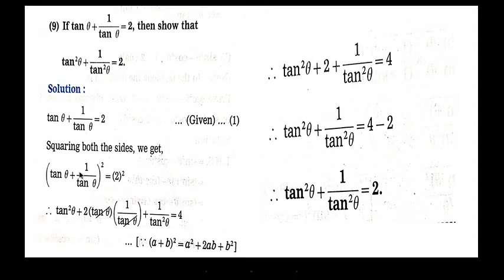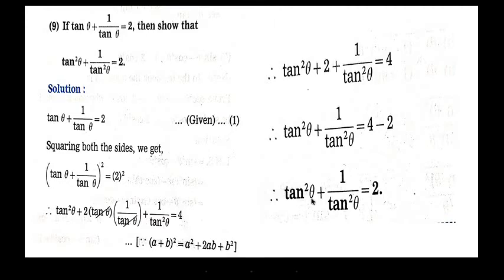The left hand side tan theta plus 1 upon tan theta whole square is in the form a plus b whole square, which equals a square plus 2ab plus b square. So we have tan square theta plus 2 into tan theta into 1 upon tan theta plus 1 upon tan square theta equals 4. The middle term tan theta and 1 upon tan theta cancel, giving tan square theta plus 2 plus 1 upon tan square theta equals 4. Taking 2 to the other side, tan square theta plus 1 upon tan square theta equals 2. This is what we had to prove.